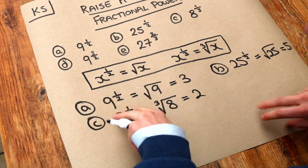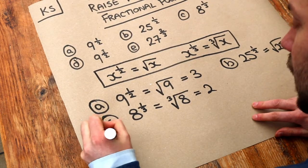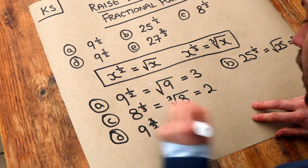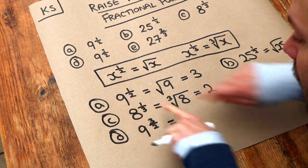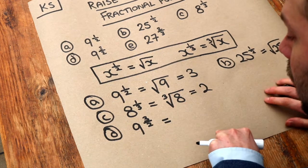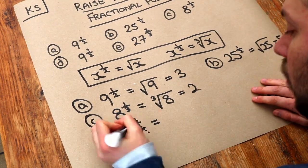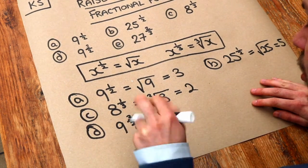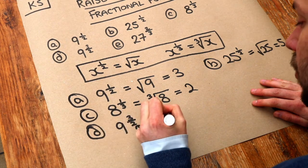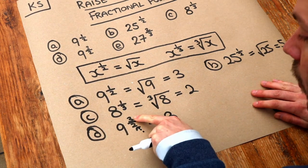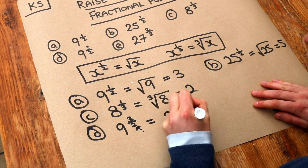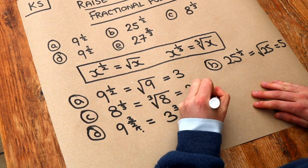Now, these last ones are slightly more complicated. If we had 9 to the power of 3 over 2, now we know if we had a power of a half, with the 2 at the bottom of the fraction in the power, then we're going to do the square root. So we look at that denominator of the fraction first, that 2, and that means we're going to do the square root of 9, which we know is 3. But we've still got that power of 3 in the numerator there. So we're going to put the 3 here, and 3 cubed is equal to 27.